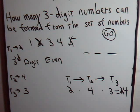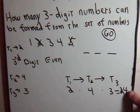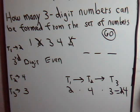So out of the 60 numbers, 24 of them will be even numbers.